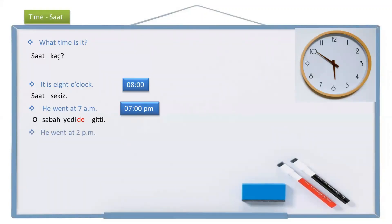If the sentence is he went at 2 p.m., then I understand he went in the late afternoon, after afternoon. He — o, went — gitti, at 2 — ikide. Instead of p.m., I say öğleden sonra, which means 'after afternoon.' He went at 2 p.m.: o öğleden sonra ikide gitti.